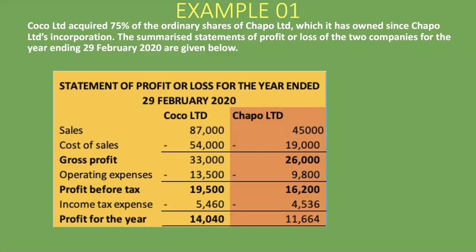Let's go through an example. We are told that Coco Limited acquired 75% of the ordinary shares of Chapel Limited, which it has owned since Chapel Limited's incorporation. The summary statements of profit or loss for the year ending 29 February 2020 are given. In yellow we have Coco Limited as the parent company and Chapel Limited as its subsidiary, since Coco Limited owns 75%. We'll add together all elements from sales to profit for the year for both companies. Starting with sales: 87,000 rand for Coco Limited plus 45,000 rand for Chapel Limited equals 132,000 rand.